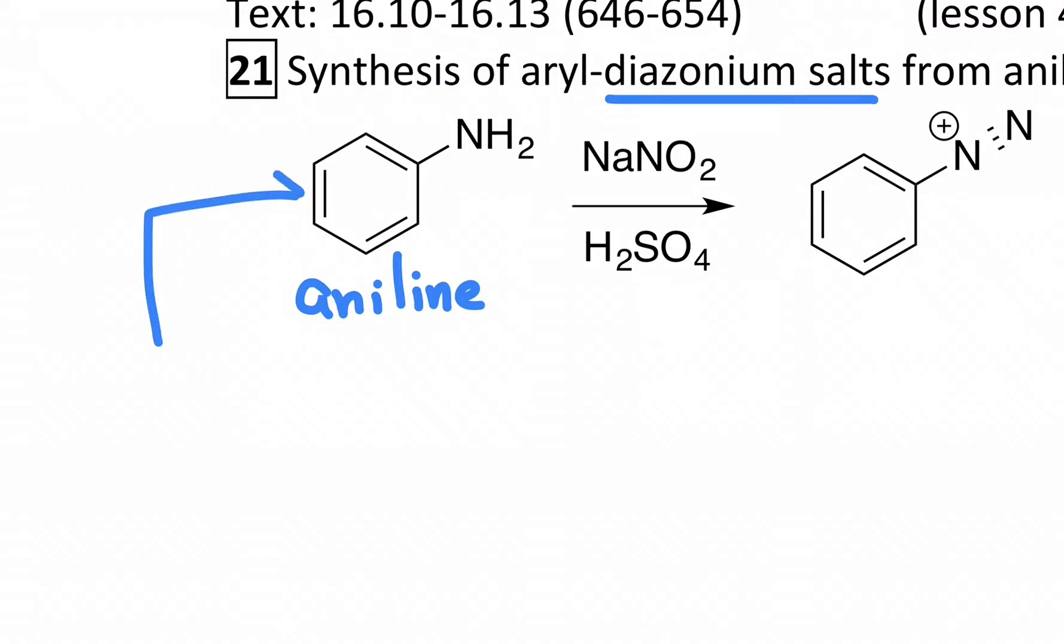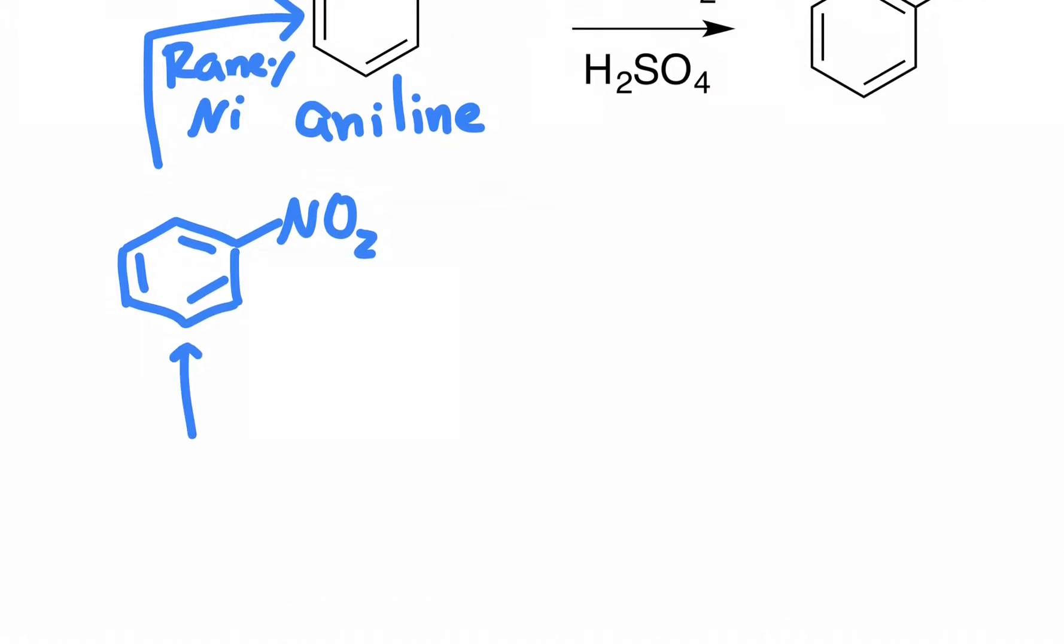I'll just sneak it into the margin here. Anilines are made from reductions of nitrobenzenes. You do that with hydrogenation and the Raney nickel catalyst. That's one way to do it, and nitrobenzenes are made from benzene. We learned that on the first day of substitution reactions with nitric and sulfuric acid, so just a refresher of how you could put some reactions back-to-back to make an aniline molecule.